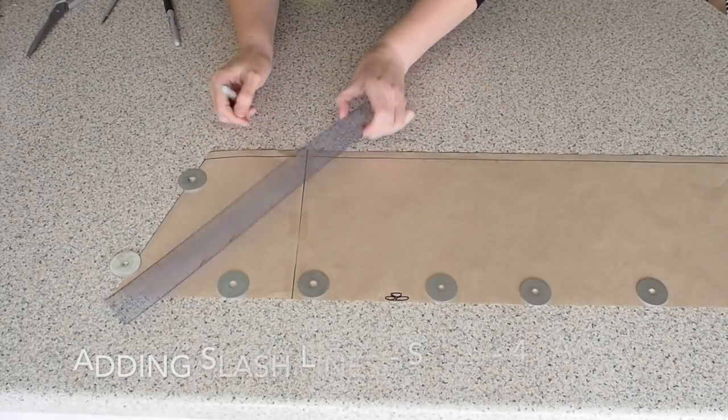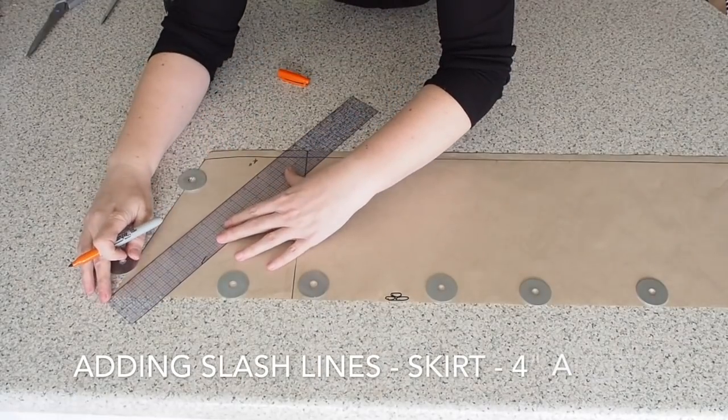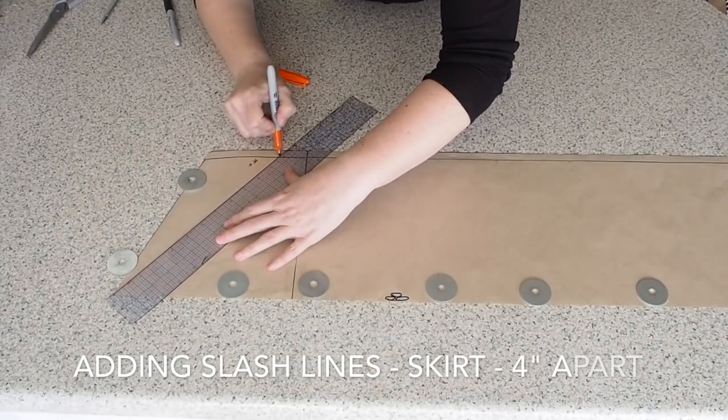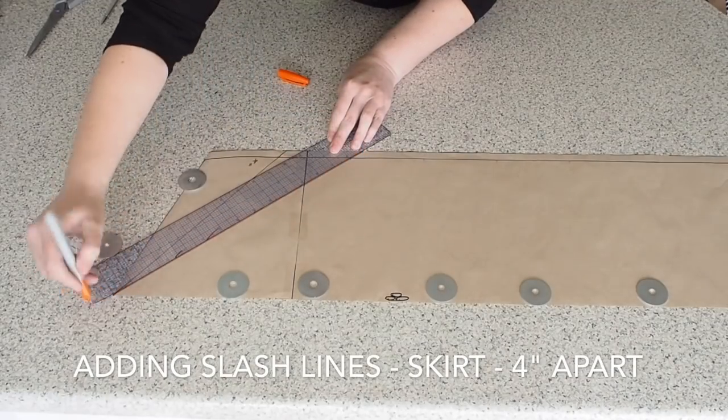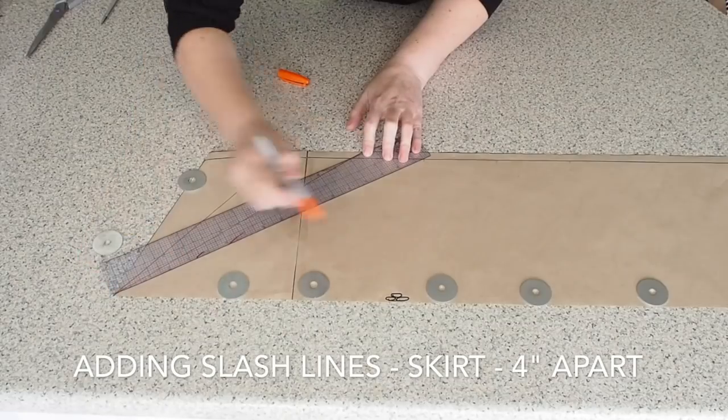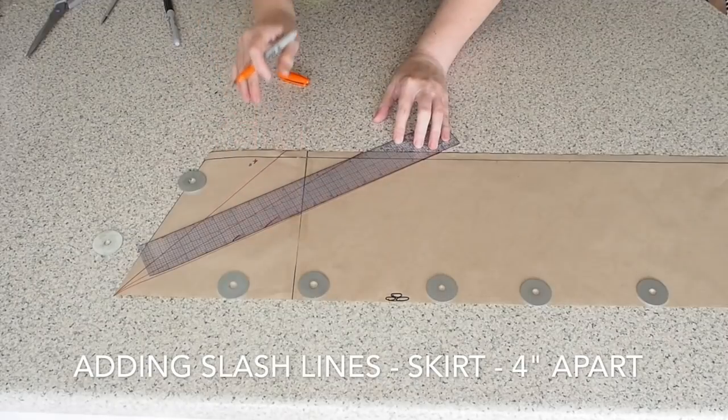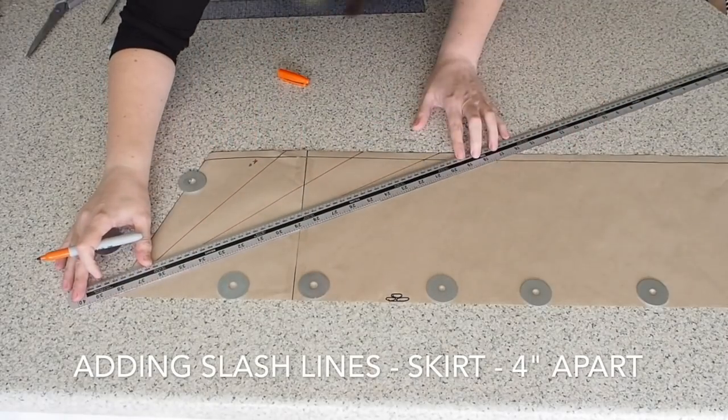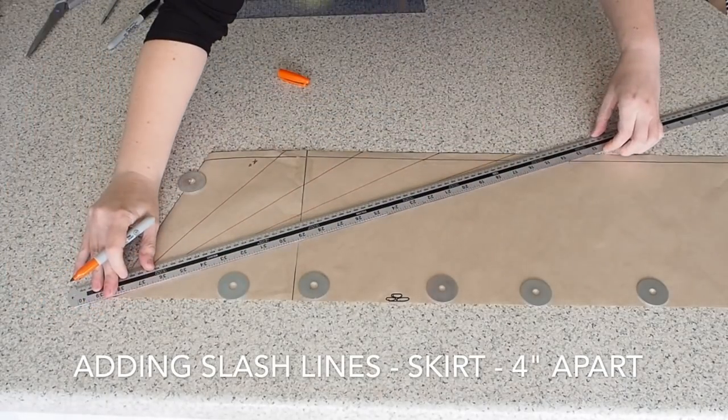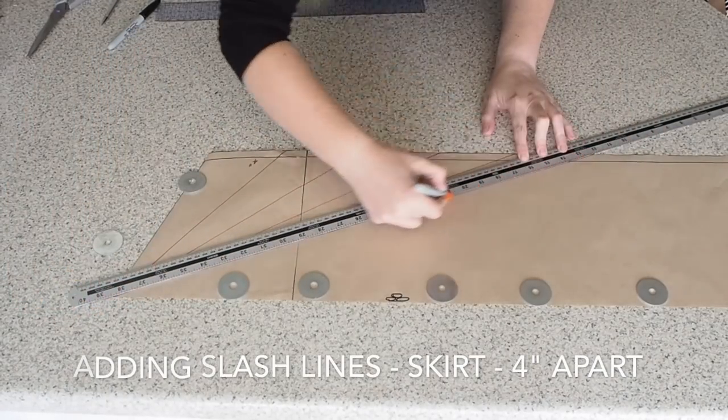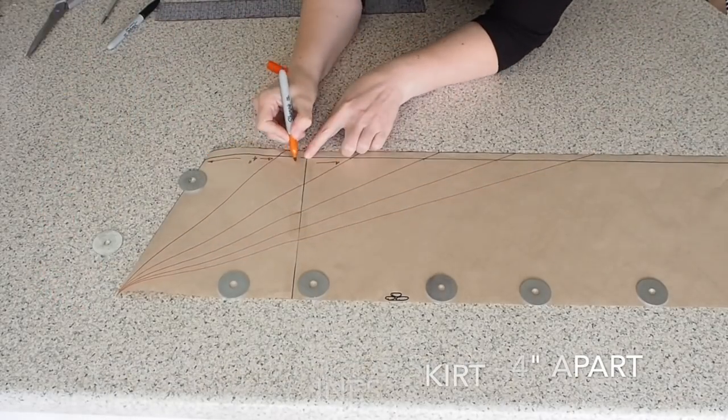So that's my skirt piece. And I'm going to do exactly the same thing here as you see me do on the bodice and the waist piece. The only difference here is these lines are four inches apart. And the lines actually can be drawn whatever width apart you want them to be. This just happens to be what worked really well for me. So that's my skirt done.